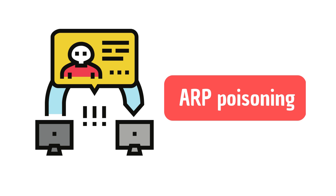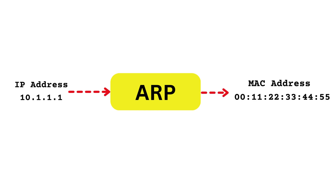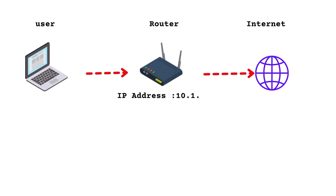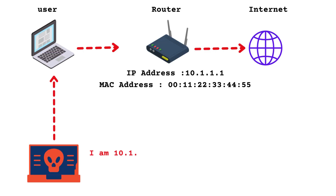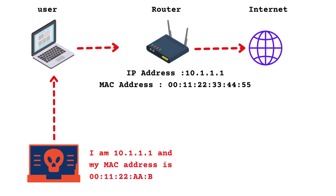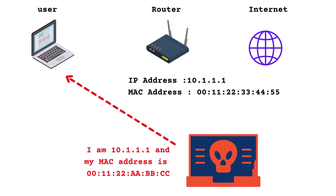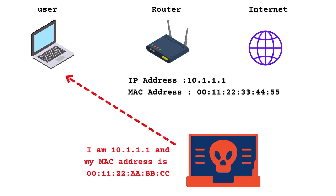ARP poisoning is the most common and potentially most dangerous man-in-the-middle attack. ARP translates between IP addresses and the MAC addresses of devices. Under normal operation, the user communicates with a web application via the gateway device or router using a MAC address. In a man-in-the-middle attack, the attacker sends out falsified ARP responses for a given IP address, typically the default gateway for a particular subnet, causing victim machines to populate their ARP cache with the MAC address of the attacker's machine instead of the local router's MAC address.